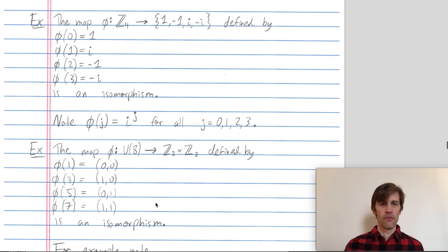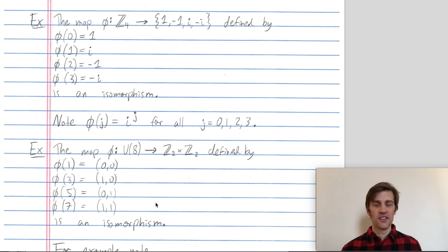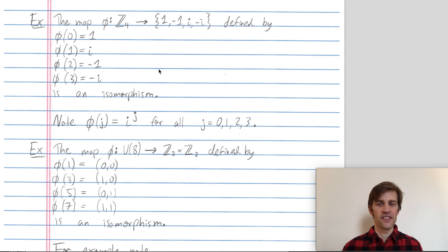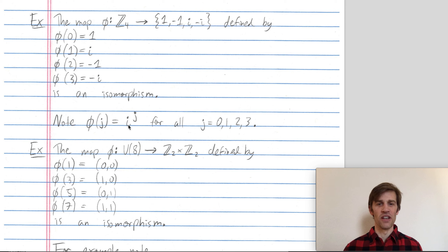Another example isomorphism is a map phi from Z mod 4 to the complex numbers {1, −1, i, −i}, where the operation in the second group is complex multiplication. This map sends 0 to 1, 1 to i, 2 to negative 1, and 3 to negative i. You can check that this satisfies the property of an isomorphism; it's easiest to use the formula that phi maps an integer j to i — the square root of negative 1 — raised to the j-th power.